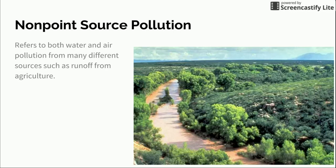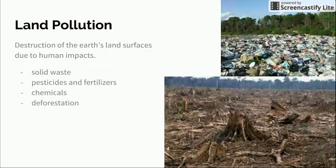Then we have non-point source pollution, and this refers to both water and air pollution from many different sources, such as runoff from agriculture. As you see in this picture, you have the river here that's been polluted by non-point source pollution — many different sources.